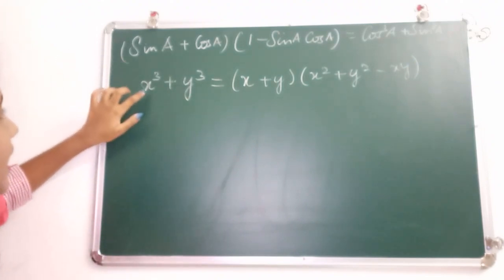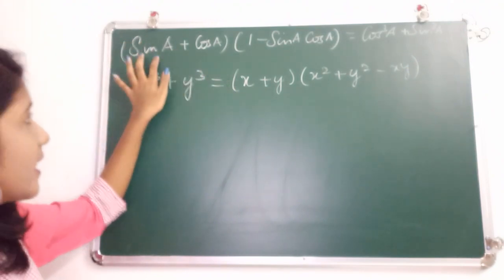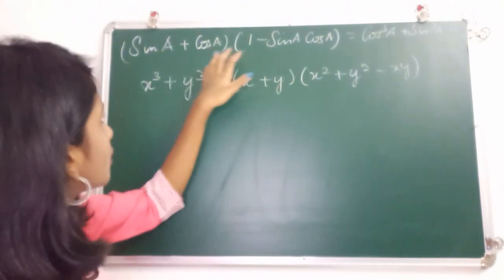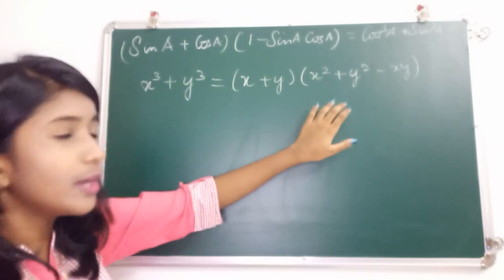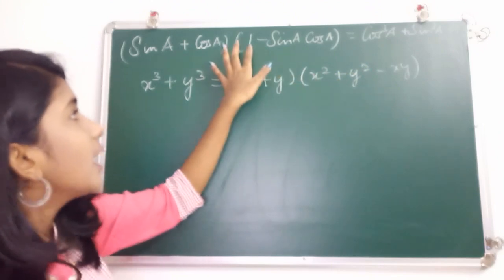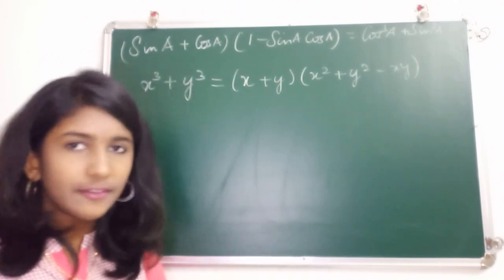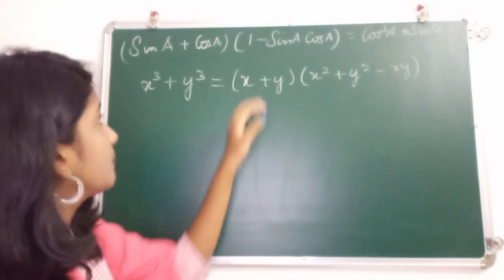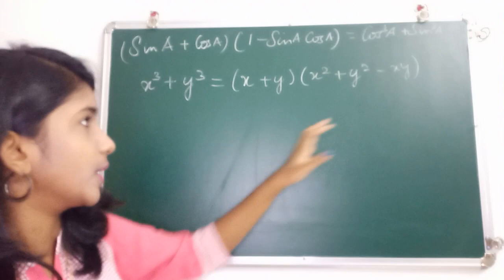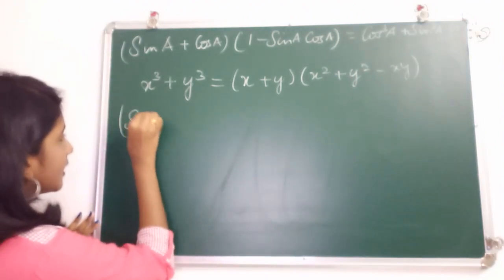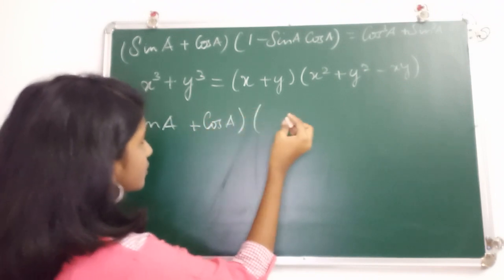Comparing this identity with the statement, we take x as sin A and y as cos A. So we have (x + y) and minus xy, that is minus sin A cos A. We don't have x² + y² directly — instead we have 1. We can convert 1 as sin²A + cos²A using the Pythagorean identity.